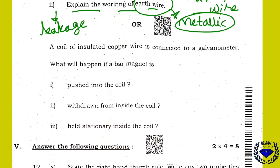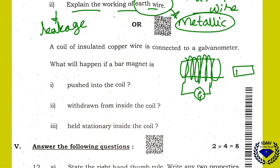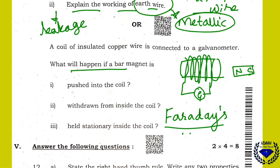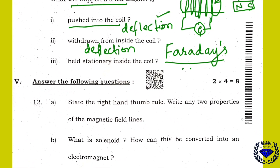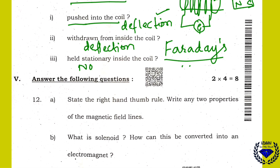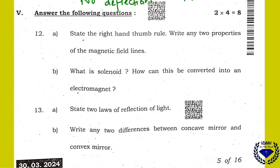An insulated coil of copper wire is connected to a galvanometer. When you bring a bar magnet near it — this is Faraday's experiment. When the magnet is pushed inside the coil, there is a deflection. When it is withdrawn from inside the coil, there is deflection in the opposite direction. When the magnet is held stationary inside the coil, there is no deflection — no current is induced.